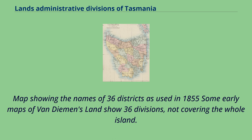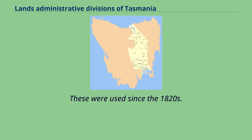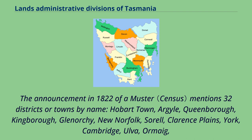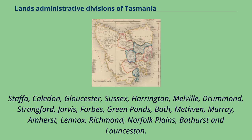A map shows the names of 36 districts as used in 1855. Some early maps of Van Diemen's Land show 36 divisions not covering the whole island; these were used since the 1820s and were known as districts, preceding the survey of counties and parishes. The announcement in 1822 of a muster mentions 32 districts or towns by name: Hobart Town, Argyle, Queenborough, Kingborough, Glenorchy, New Norfolk, Sorrel, Clarence Plains, York, Cambridge, Ulva, Caledon, Gloucester, Sussex, Harrington, Melville, Drummond, Strangford, Jarvis, Forbes, Green Ponds, Bath, Methon, Murray, Amherst, Lennox, Richmond, Norfolk Plains, Bathurst, and Launceston.